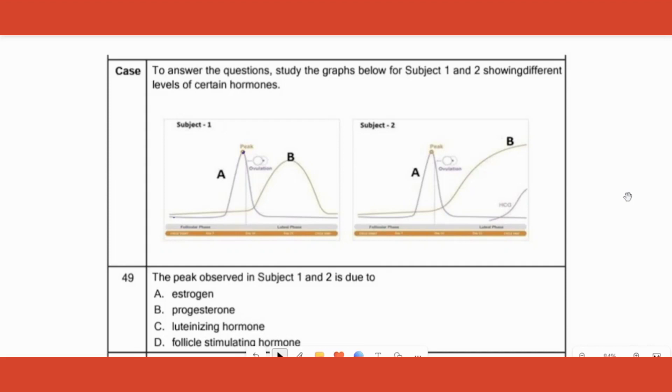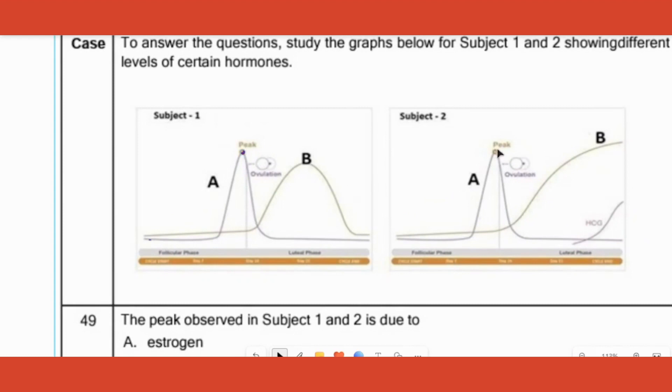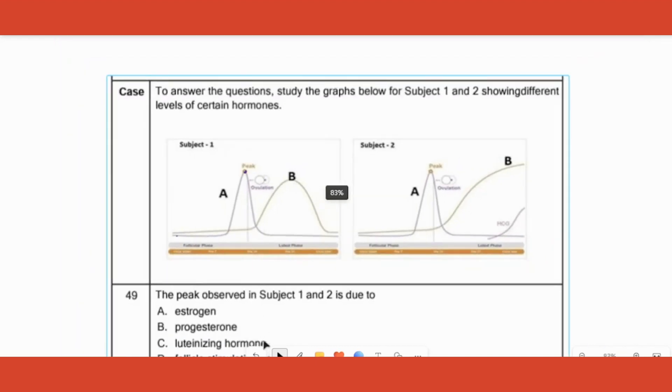It is the time when the uterine lining is preparing for pregnancy. If the person gets pregnant, this graph will never come down of progesterone. Instead it will be steady. With this knowledge, can we try to answer this question? There are two graphs given. You can see that there is a peak here and there is another peak here.